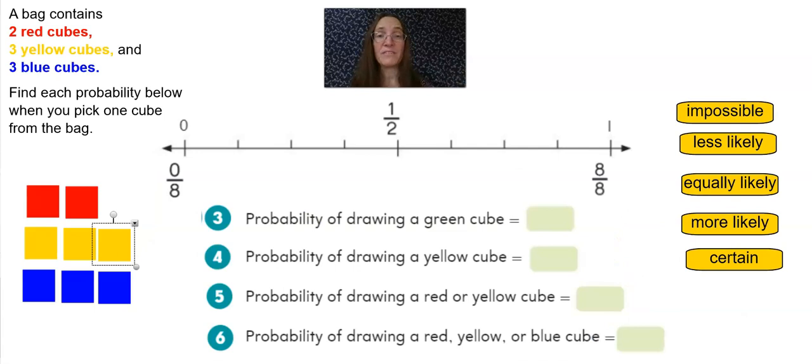Let's move away from spinners and consider those bags where you can't see what's in there, but you know what's there. A bag contains two red cubes, three yellow cubes, and three blue cubes. Find each probability below for you picking just one cube from the bag.